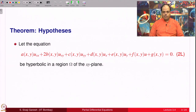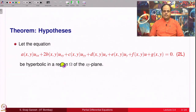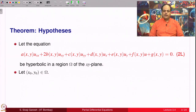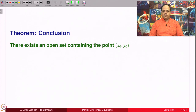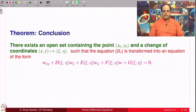We state what we are going to see as a method, as a theorem. The hypothesis: consider the second order linear equation 2L, given by the standard form. Assume that this equation is hyperbolic in an open set — meaning open and connected — region omega of the xy plane, so throughout the domain omega the equation is of hyperbolic type. Take a point (x₀, y₀) in omega. The conclusion is: there is an open set containing the point (x₀, y₀) and a change of coordinates defined on that open set such that equation 2L is transformed into the canonical form.